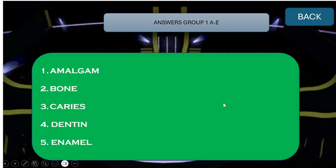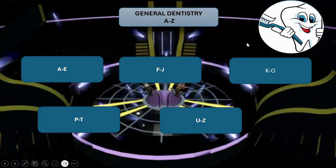I hope all of you have noted your answers from A to E, so let's check if you got it right or wrong. The answers for this group were: A — Amalgam, B — Bone, C — Caries, D — Dentine, and E — Enamel. I hope you have understood how this game works, so without further ado, let's go to our next group — questions from F to J.